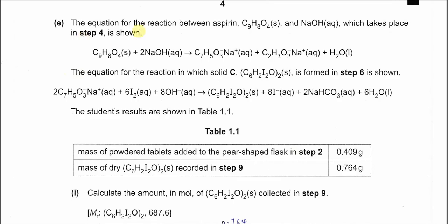Part E. The equation for the reaction between aspirin and sodium hydroxide in step 4 is this equation, I told you just now. The equation for the reaction which solid C produces in step 6 is this one. This one and sodium hydroxide, they are impurities. This is the one that forms solid C. So this one brings to the next step here, next equation, and it will react with iodine.